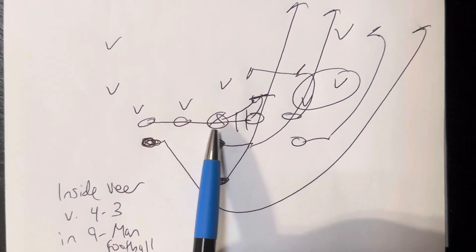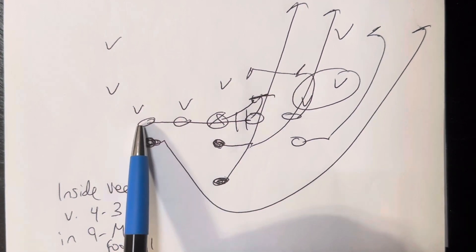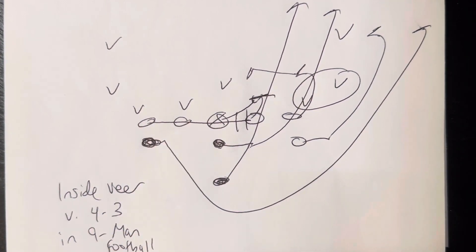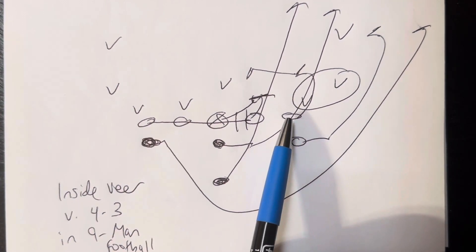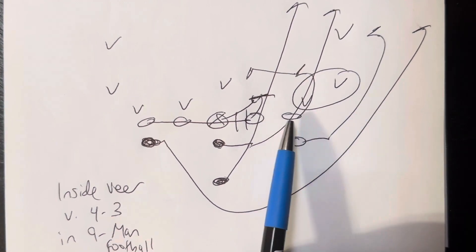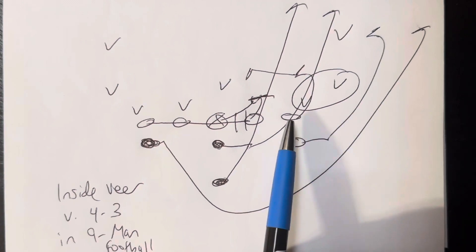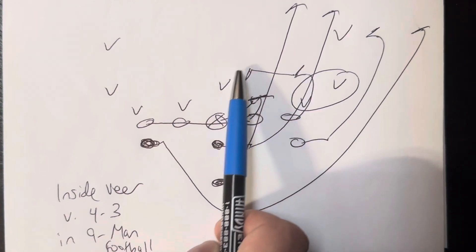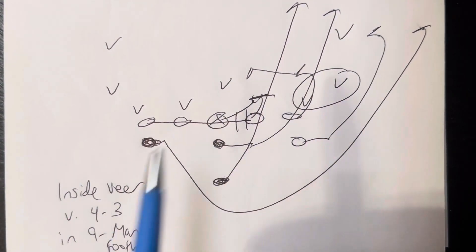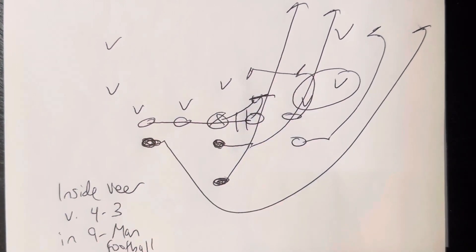The backside guard is going to block the spine of the center. The backside end is going to block the spine of the backside guard. The play side end, even though it's an ace call, he doesn't need to protect the b-gap because the mic can't run through the b-gap, so he'll outside release and block the mic. So he'll get in front of the mic that way.